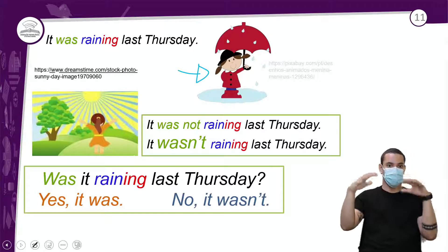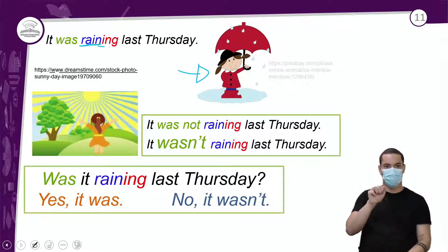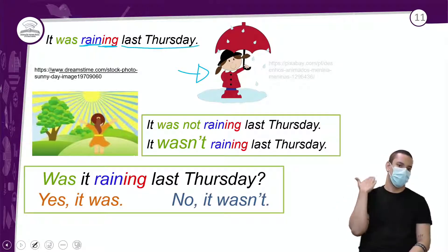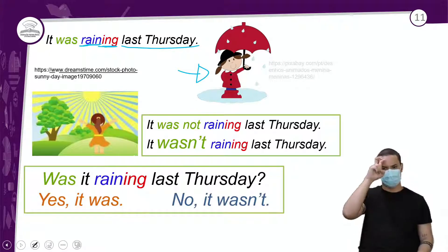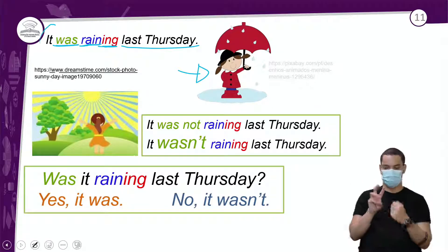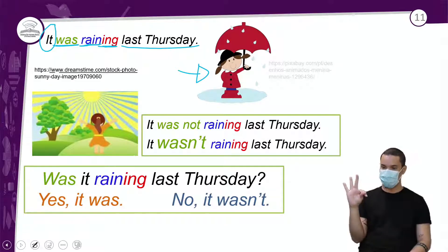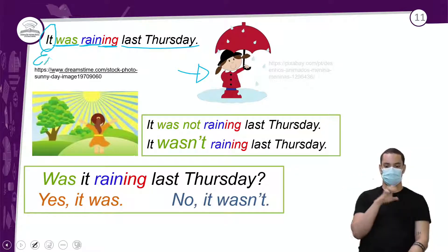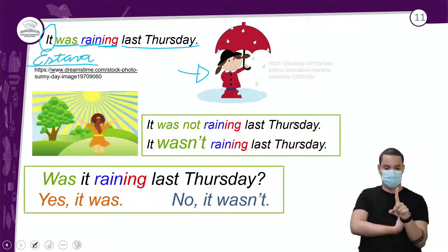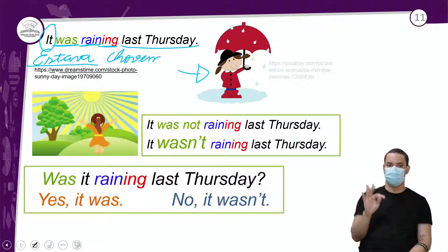Agora mais exemplos. Está chovendo — verbo 'rain' com -ing. 'It was raining last Thursday' — estava chovendo quinta passada. Eu uso 'was' e o sujeito 'it'. Esse 'it' não é traduzido — em inglês não tem sujeito oculto. Estava chovendo quinta passada.